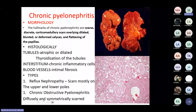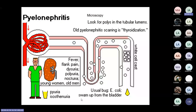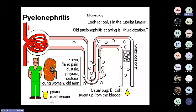Clinical symptoms of pyelonephritis include fever, flank pain (loin pain), dysuria, polyuria, and nocturia — usually seen in young women and old men. In urine examination, you will find pus cells and isosthenuria — fixed specific gravity of urine due to chronic renal failure. The most common organism on renal culture is E. coli, which swims up from the bladder to the kidney using flagella. Microscopically, you see polys in the tubular lumens, and in old pyelonephritis, gross scarring, interstitial fibrosis, chronic inflammatory cells, and thyroidization.